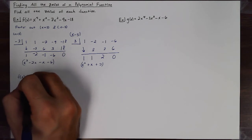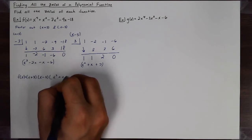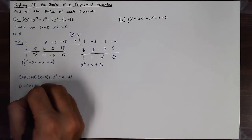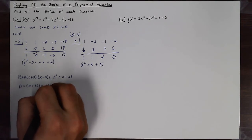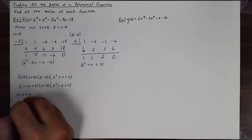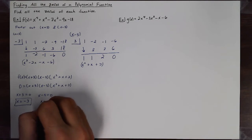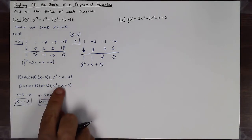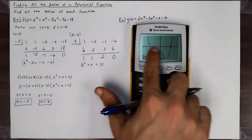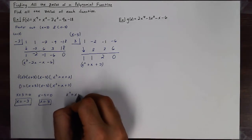So I can now factor f(x) as (x+3)(x-3)(x²+x+2). Setting this equal to zero, I set each factor equal to zero. x plus 3 equals zero gives x equals negative three. These last two roots are probably imaginary since I did not see them cross the x-axis, so I can assume they're going to be complex solutions. For x² + x + 2 = 0, I'll use the quadratic formula.